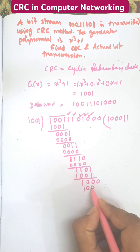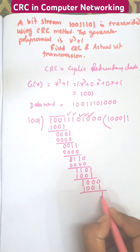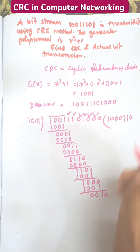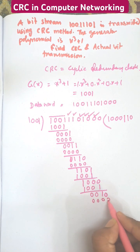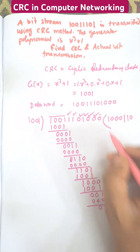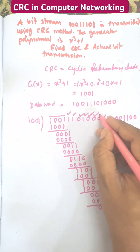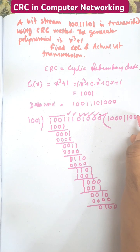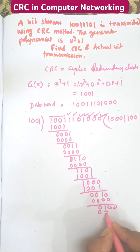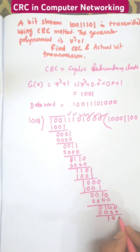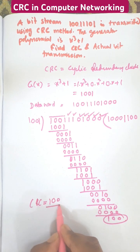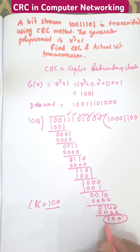1001 equals 100, x is 0, now multiply by 0. That equals 0000. The remainder is 100. This is known as the CRC. So CRC equals 100. The remainder is known as the CRC bits.